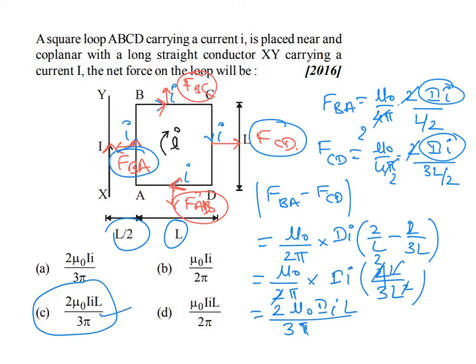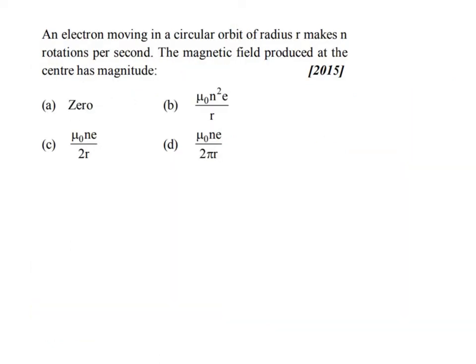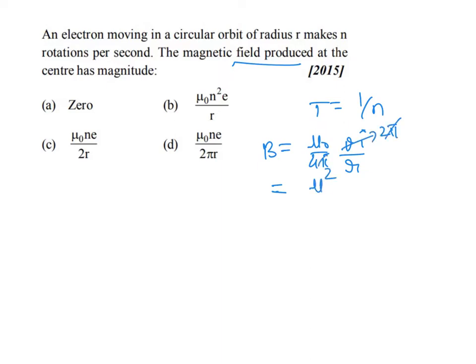Next problem: an electron is moving in a circular orbit of radius r and makes n rotations per second. The time period T = 1/n. The magnetic field produced at the center is given by B = (μ₀/4π) × (θI/r), where θ = 2π, giving B = μ₀I / (2r).